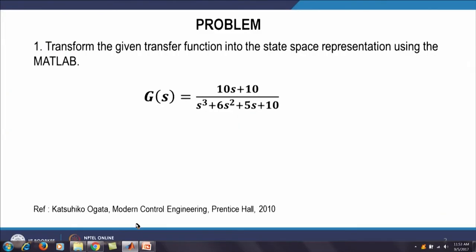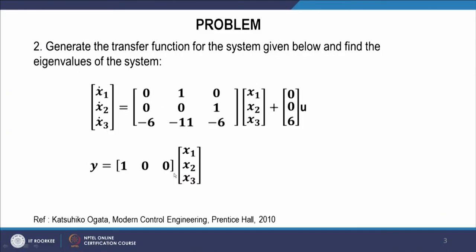Now we come to Problem 2: generate the transfer function for the system given in state space form and find the eigenvalues of the system. The A, B, and C matrices are given; the D matrix is 0 because it is not given. We will solve this in MATLAB.